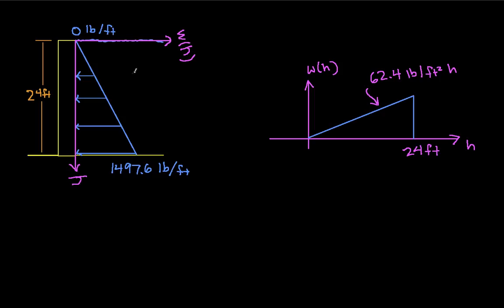And then I take this whole thing, rotate it 90 degrees counterclockwise, and it looks like this. I have h, so this is my depth increasing. This is the weight function as a function of depth, and this basically is the line that gives me that weight. The slope of the line is 62.4 pounds per feet squared. The line itself is actually 62.4 pounds per square foot times h.